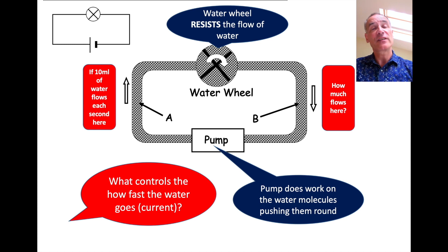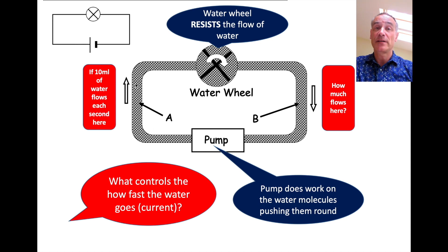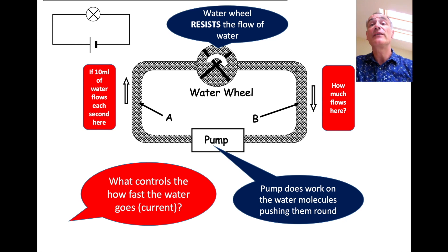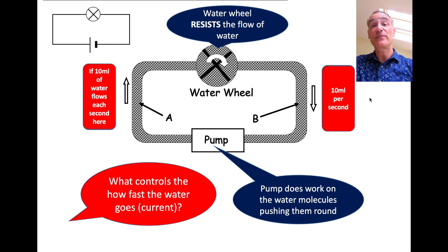Now let's have a look at the current that flows. Suppose there are 10 millilitres of water per second flowing in this part of the pipe. How much water per second will be flowing here? Lots of people think the water will be less here because of the water wheel. But if there was less water flowing per second, we'd have a leak. Whatever water flows out to the pump flows back. So it flows at the same speed all the way around, which means there must be 10 millilitres per second flowing here - because current is the same in a series circuit.